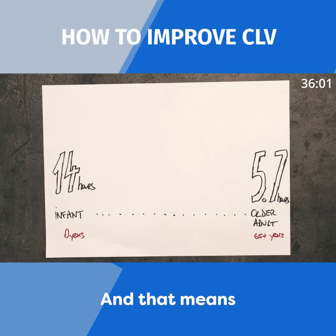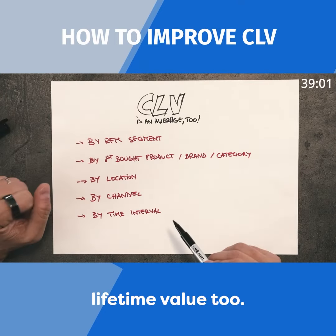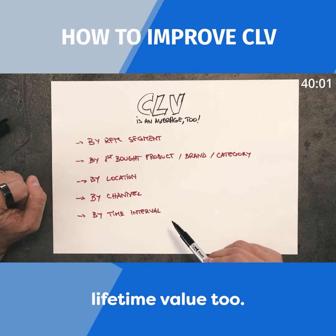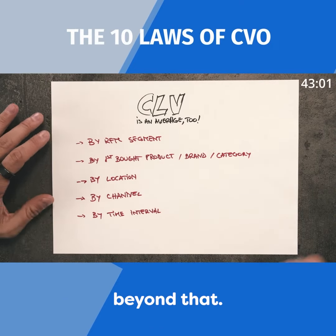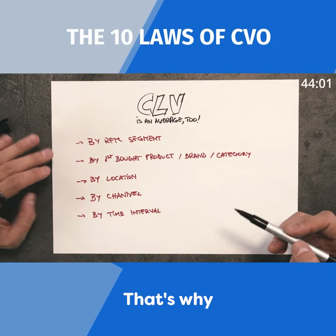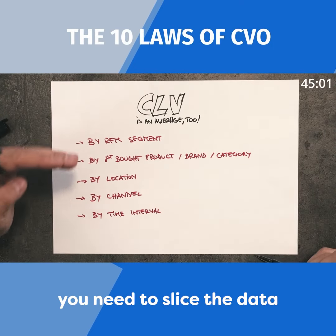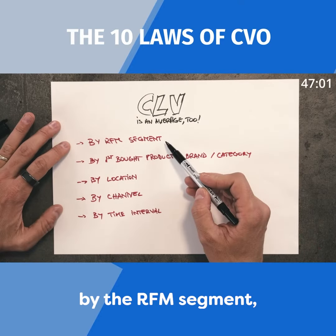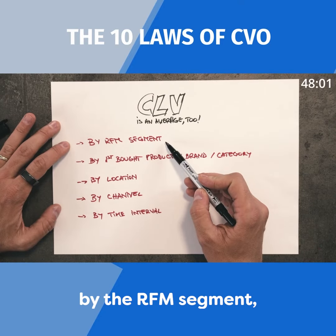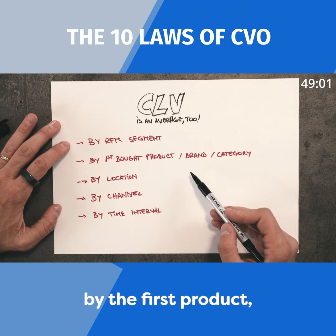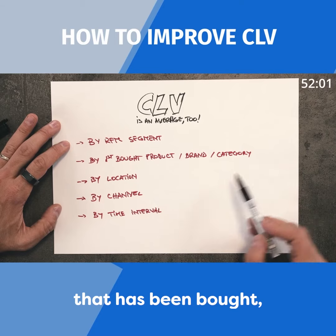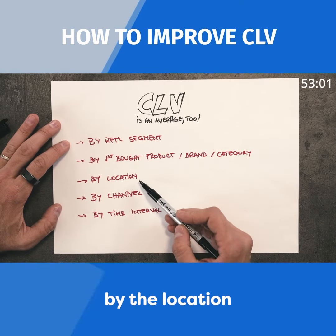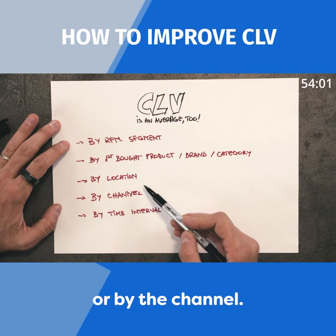That means you need to look beyond the average — and that's true for customer lifetime value too. CLV is an average as well. So you need to slice the data and look at CLV by the RFM segment, by the first product, brand, or category that has been bought, by the location, or by the channel.